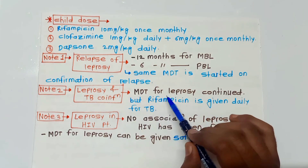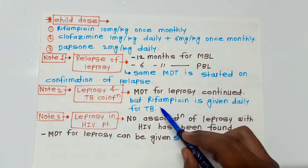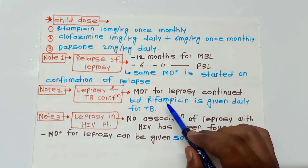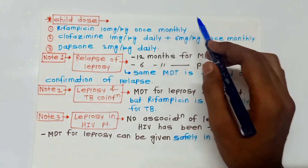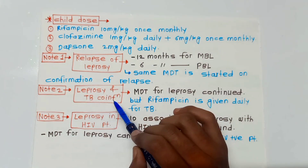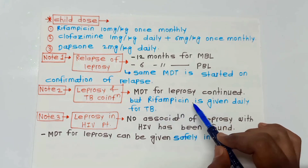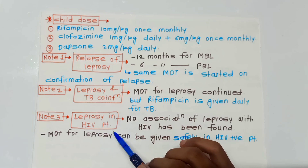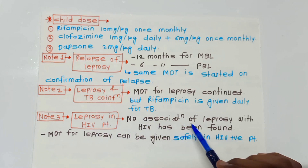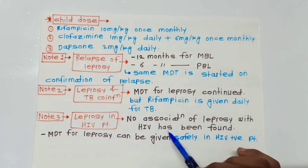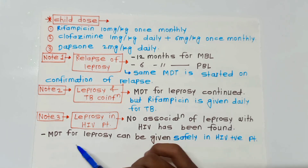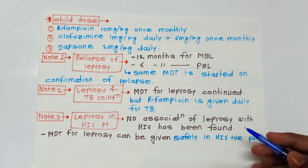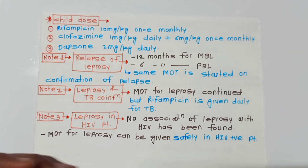Note 2 — Leprosy and TB co-infection: the multi-drug treatment for leprosy is continued, but rifampicin is given daily for TB. Earlier we only give rifampicin once monthly, but in TB co-infection we need to give rifampicin daily for TB. Note 3 — Leprosy in HIV patients: there is no association between leprosy and HIV that has been found, and the multi-drug treatment for leprosy can be given safely in HIV-positive patients.